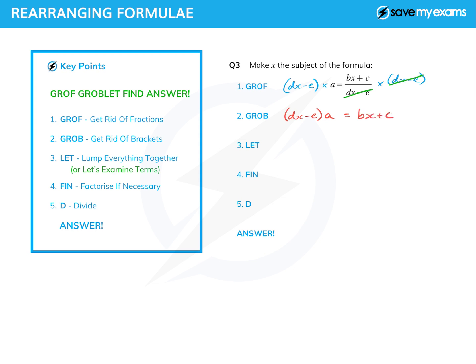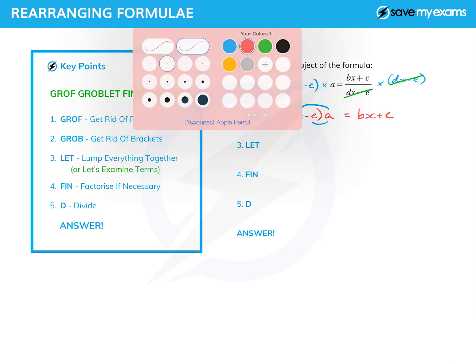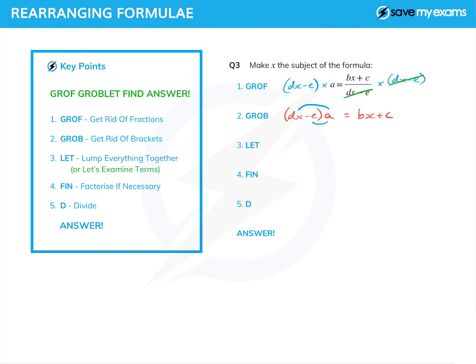Second step: get rid of the brackets. We've got one thing outside the bracket — link it to each thing inside the bracket and follow the multiplications. So dx times a I'm going to write as adx — I always tend to do things in alphabetical order. And then the bottom link: minus e times a is minus ae, again in alphabetical order, although it doesn't really matter if you don't. And I've still got my bx plus c on the right.